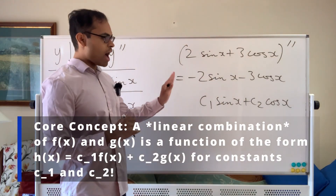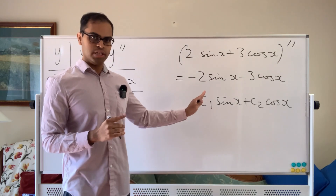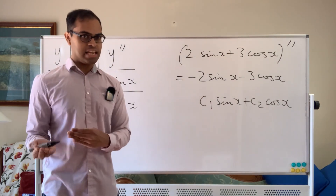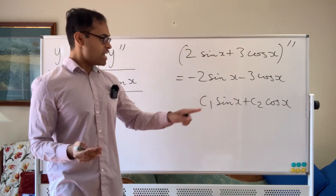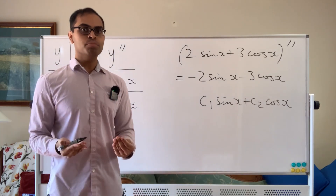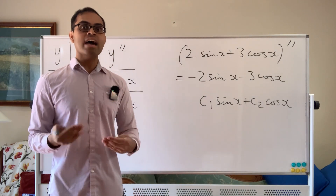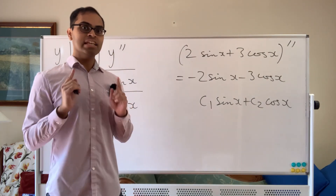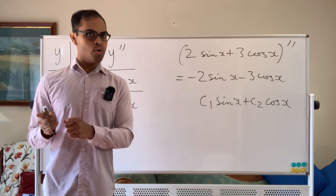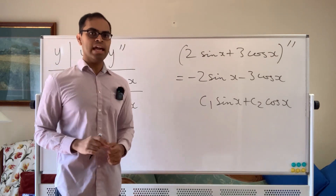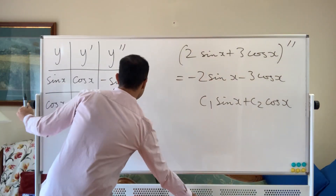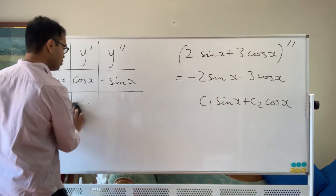Our question is: are all functions whose second derivative equals negative of themselves equal to such a linear combination? I'm going to show you a beautiful proof that dives into the world of complex numbers, and the answer is going to be yes and no. Watch till the end to find out what I mean by that. Right now, I'm just going to start off with the proof.